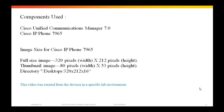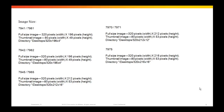The components used in this video are Cisco Unified Communications Manager 7.0 and Cisco IP phone 7965. One key thing here is you should use the standard image size for your IP phone series. For example, if you are using Cisco IP phone 7965, the full size image should be 320 pixels width and 212 pixels height. The thumbnail image should be 80 pixels width and 53 pixels height. The directory name should be /desktops/320x212x16. For other series of IP phones, you can refer to this sheet for the standard image size.